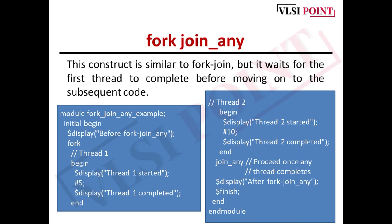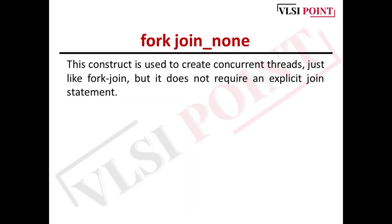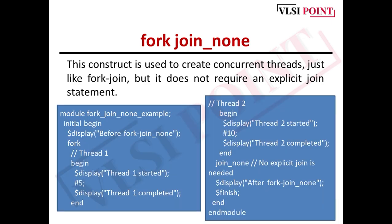Simulate the given code and check what output you get. Next is fork-join none. Fork-join none is used to create concurrent threads without any explicit synchronization. Threads execute independently and the main thread doesn't wait for their completion — it continues execution without waiting for the threads. No matter how many threads are defined or how long they take, the join none statement will not wait for any thread to complete. In the code, we simply replace with join none.